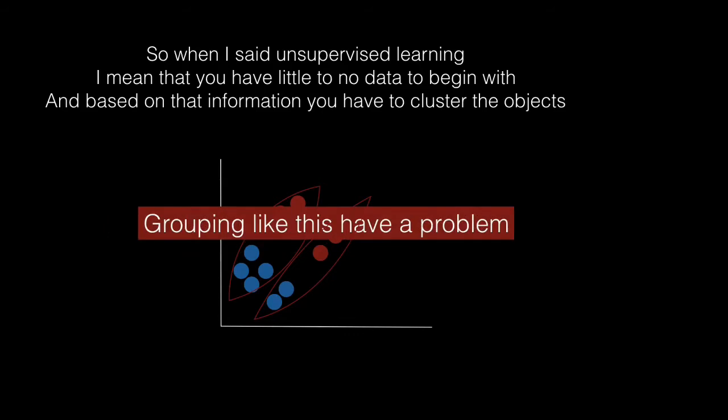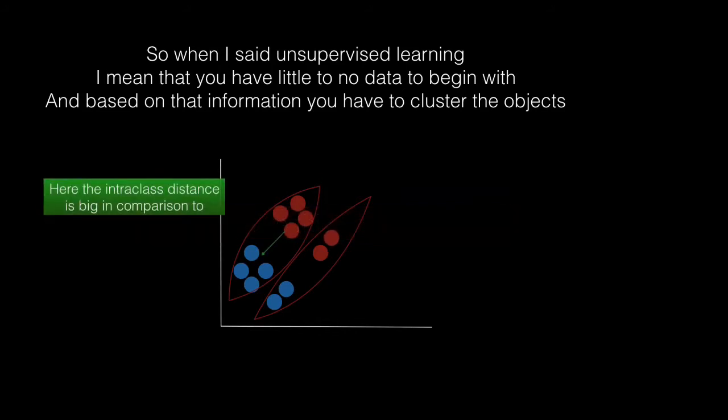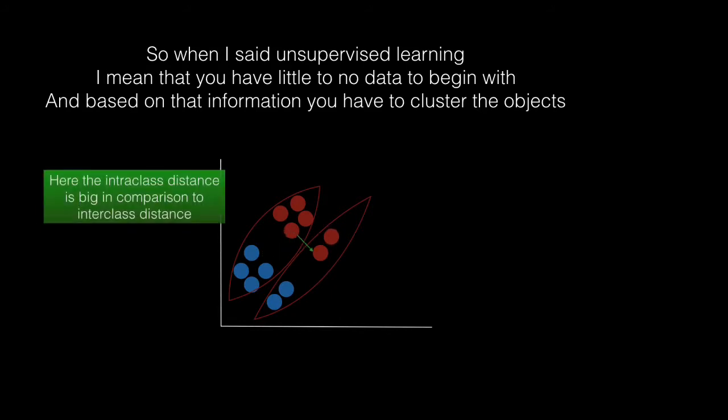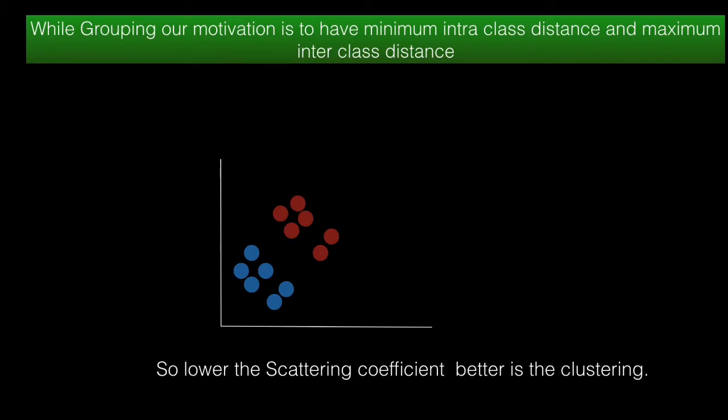While clustering, what should be the motivation? There's one way of clustering the datasets, but while grouping them, our motivation should be to have a very low intra-class distance and maximum inter-class distance. The other one had large intra-class distance and low inter-class distance, so that was not a fine one.